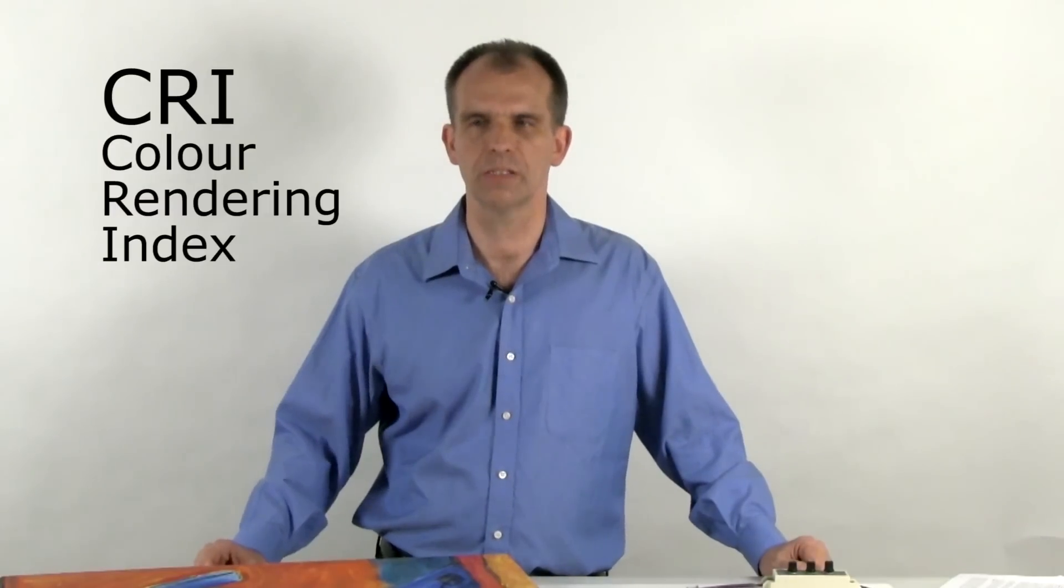CRI is something that was created by a French organization called the CIE, which is the worldwide authority on color. So CRI is the adopted standard to talk about how accurately a light source will show its colors. Unfortunately, CRI itself as a metric has some shortcomings, but it's the only officially adopted standard right now.